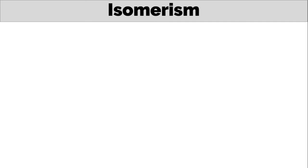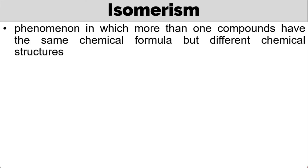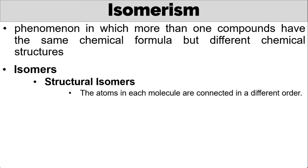Another concept that you need to know is isomerism. Isomerism is the phenomenon in which more than one compounds have the same chemical formula, but different chemical structures. Again, compounds having identical molecular formulas, but different arrangements of atoms are called isomers. One type of isomerism is called structural isomerism. Structural isomers are molecules with the same molecular formula, but their atoms have different arrangements or bonds.